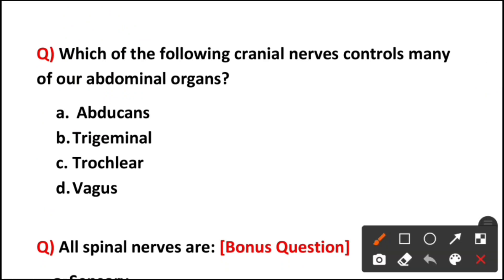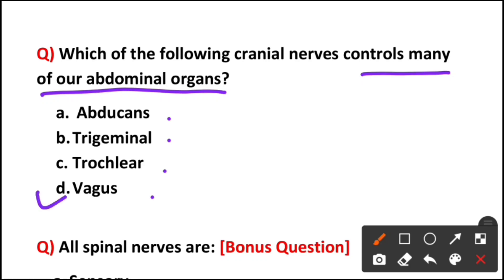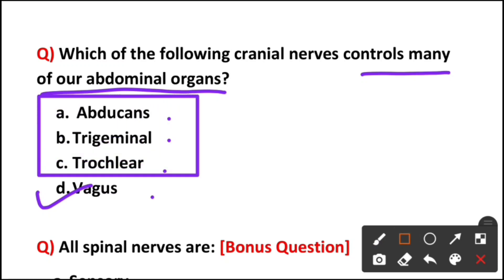Question five: which of the following cranial nerves controls many of our abdominal organs? You can already guess the answer — it is option D, the vagus nerve, which controls the major abdominal organs.